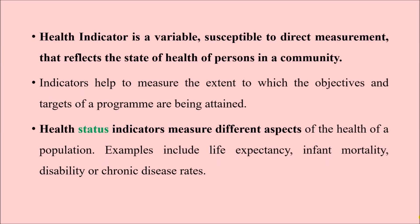A health indicator is a variable susceptible to direct measurement that reflects the state of health of persons in a community. We can use health indicators to measure the health status of people in the community. Health indicators can be measured directly, but we must remember that health indicators themselves are an indirect measurement of the health status of the people.